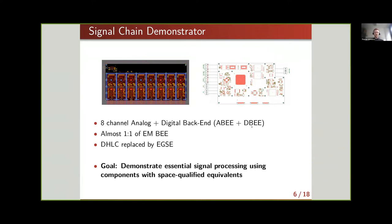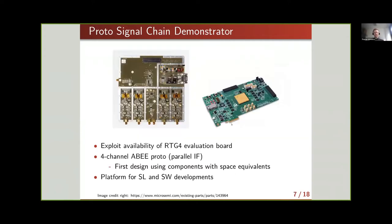Where we don't have a DHLC, we replace it with EGC equipment such as SpaceWire bricks. The overall goal is to verify that the complete signal chain from analog to digital works with space-flight components. We had to take another intermediate step — what we call the proto signal chain demonstrator. Because components are hard to source these days and custom PCB layout takes time, we used an FPGA evaluation board — the RTG4 by Microsemi — which you can buy off the shelf, allowing us to focus on the analog electronics.